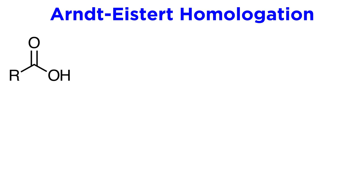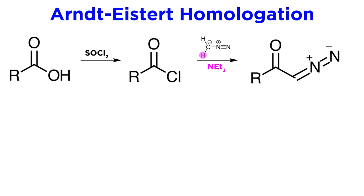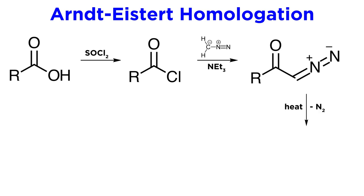Carboxylic acids can be primed for nucleophilic attack by conversion into the acid chloride, so we will first do this with SOCl2, and then react with diazomethane, which will attack the carbonyl and displace the chlorine. This is done with triethylamine to act as a proton sponge, which will accept one of the protons that was on diazomethane, leaving us with this alpha-diazo ketone. Heating this will prompt the loss of nitrogen gas, and will leave us with a carbene — we can call this an acyl carbene.